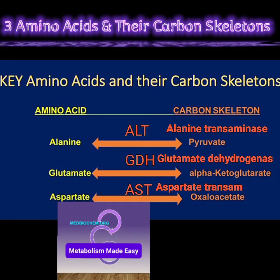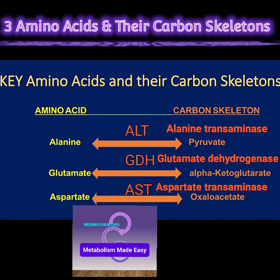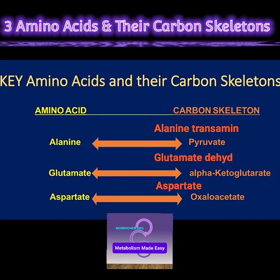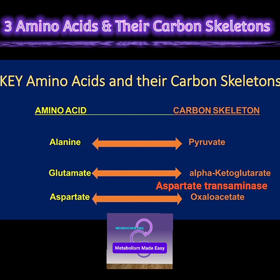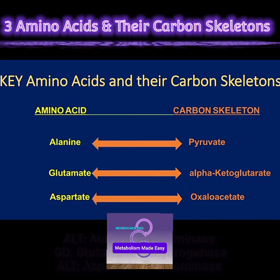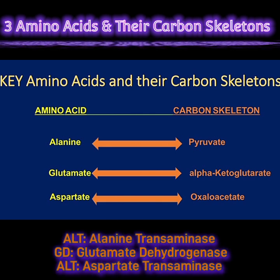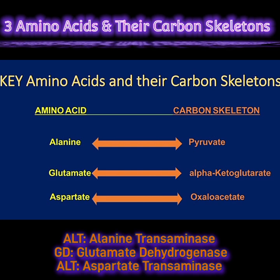The metabolism of these three amino acids directly or indirectly can provide the nitrogens that feed into the urea cycle, and as such they play a key role in overall amino acid catabolism.